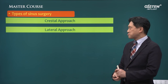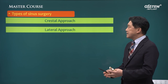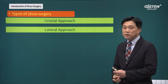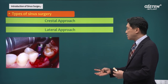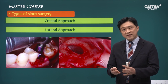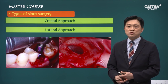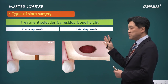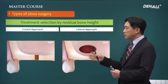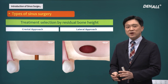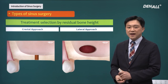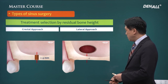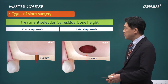As mentioned, sinus surgery can be divided into two different techniques: first is crestal approach, and second is lateral approach. When to do crestal approach or lateral approach — there is no specific criteria. However, in terms of crestal versus lateral approach, we look at the residual bone height in determining which to perform. In most cases, crestal approach is used when there is over 4 mm of residual bone, and if there is less than 3 mm of residual bone, lateral approach is done.